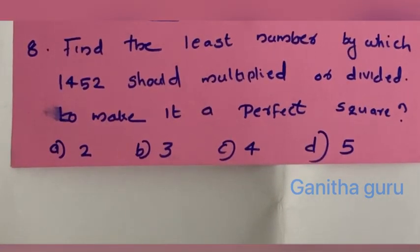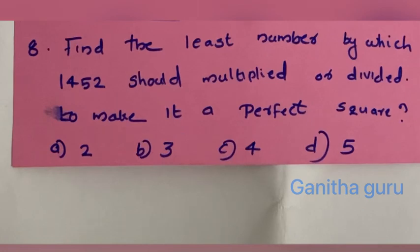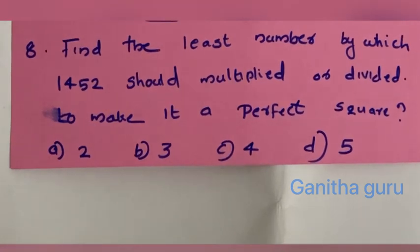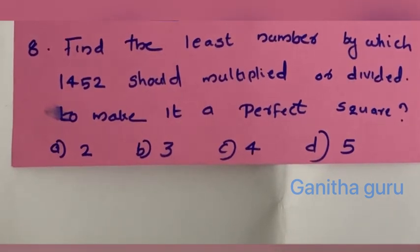Eighth question: find the nearest number by which 1452 should be multiplied or divided to make it a perfect square. So we will factorize 1452.